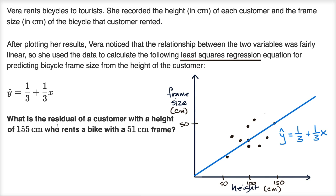Well the residual is going to be the difference between what they actually produce, and what the line, what our regression line would have predicted. So, we could say residual is going to be actual minus predicted.